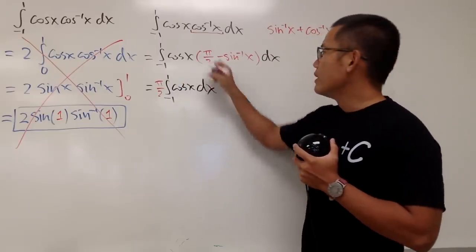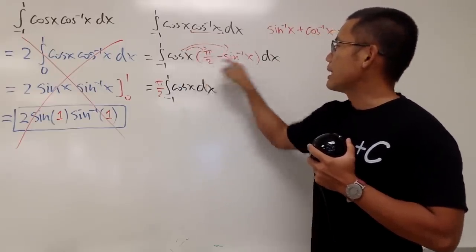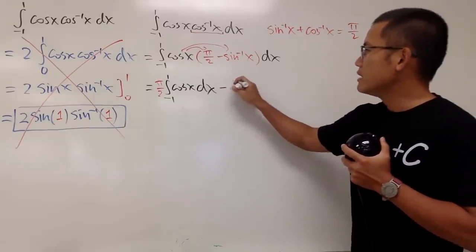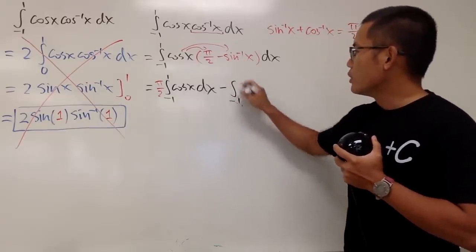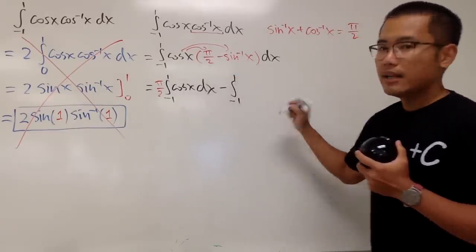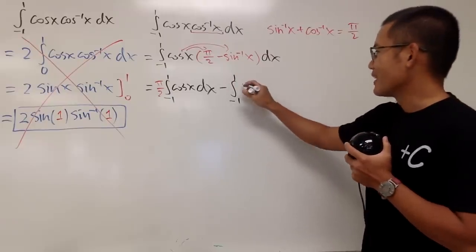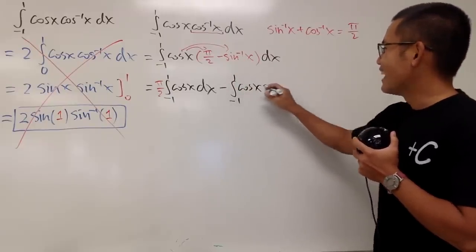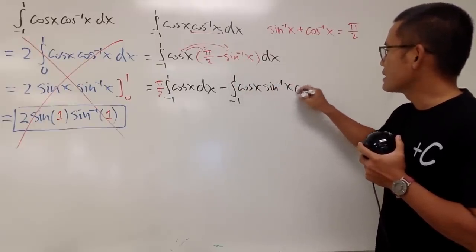And for the second one, of course, we will have to do this times that, and we will just have to minus the integral from negative 1 to 1, cos x times that, and we cannot take anything else, okay? So this is just cos x times the inverse sine of x, like this.